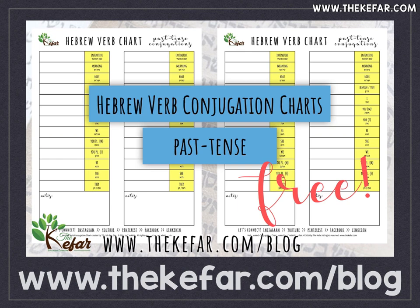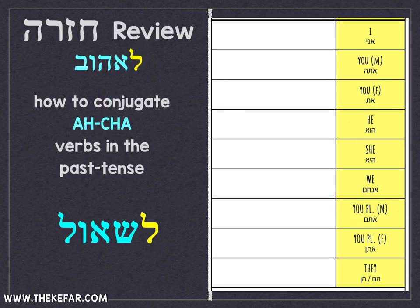Now let's go over the exercises from the last video. We learned how to conjugate the acha verbs — these are verbs where the middle letter of the shoresh is an alef, hey, chet, or ayin. We used the verb le'ehov, 'to love,' as our example verb.